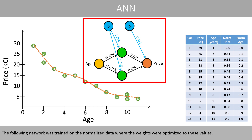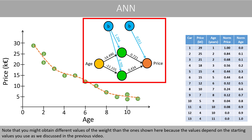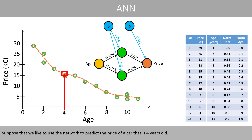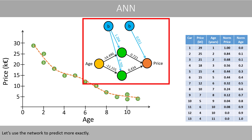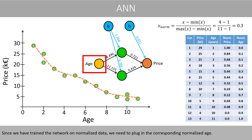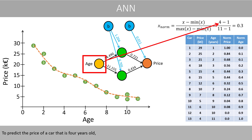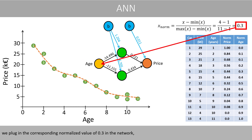The following network was trained on the normalized data where the weights were optimized. Note that you might obtain different values of the weights because the values depend on the starting values you use. Suppose that we like to use the network to predict the price of a car that is 4 years old. According to the curve, the predicted price seems to be around 16,000 euros. Since we have trained the network on normalized data, we need to plug in the corresponding normalized age. To predict the price of a car that is 4 years old, we plug in the normalized value of 0.3 in the network.